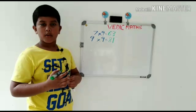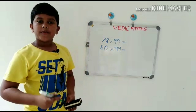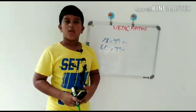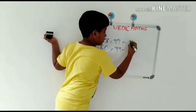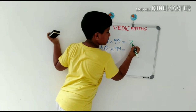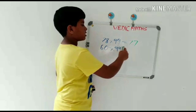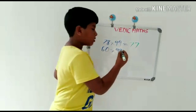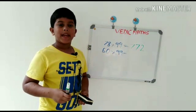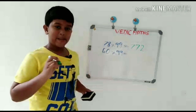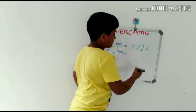Now let's move to a two-digit problem: 78 multiplied by 99. First, we should write the number 1 less than 78, that is 77. And what number should be added to 7 to get the number 9? That's 2. So the answer is 7722.